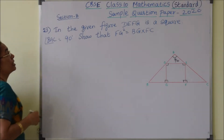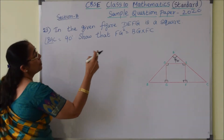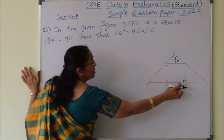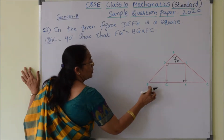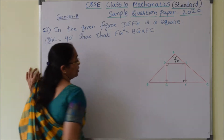So FG square is equal to BG into FC. This is what we need to prove: FG square is equal to BG into FC.